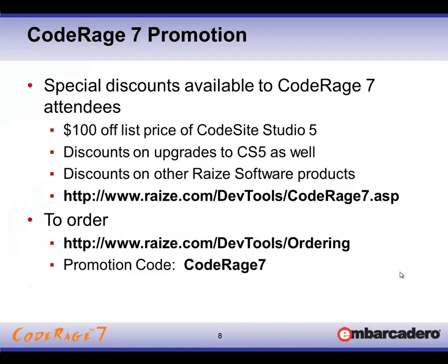For CodeRage 7 attendees, we are offering a special promotion. The normal list price for CodeSight Studio is $399 per developer in US dollars. However, for all attendees here, we are taking $100 off that list price — so it's down to $299 US dollars for a developer license. That license gives you all the logging classes and capabilities to capture information. The CodeSight tools — the live viewer, file viewer, and dispatcher — are freely redistributable with no royalties needed, and even available on our website as a free download. Be sure to use the CodeRage 7 promo code when ordering to get all the listed discounts.